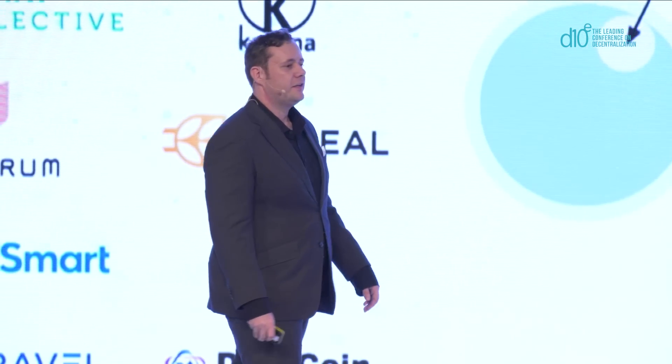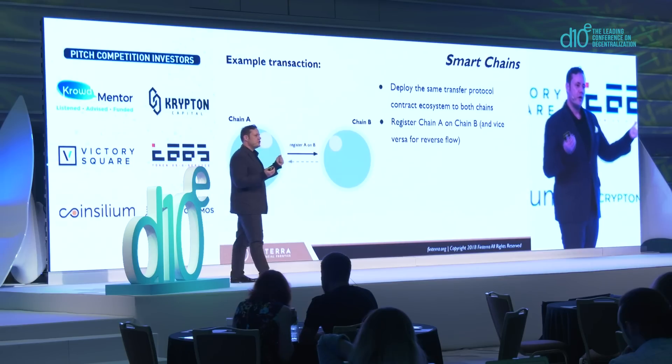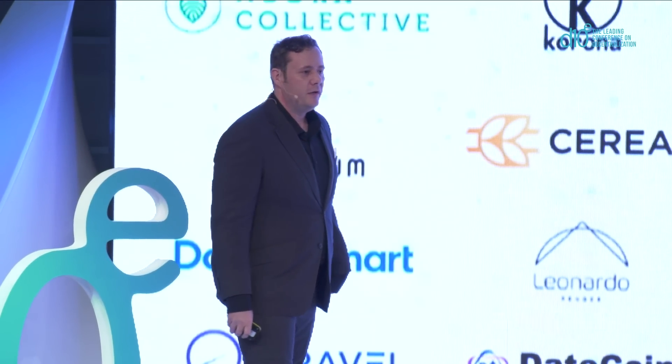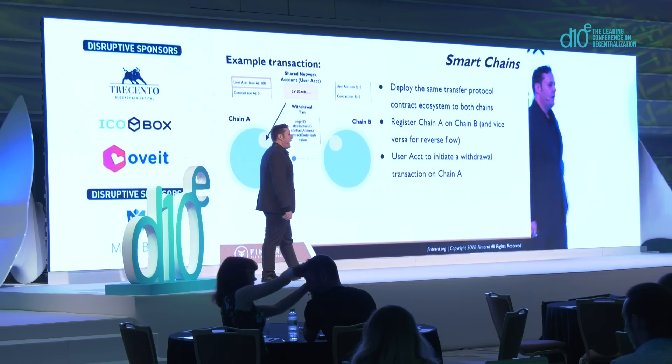I'm going to give an example of how this is accomplished — a transfer of value, transferring tokens from one chain to another. Before we do this, we need to deploy the same ecosystem of contracts on two different chains. After that, we need to register these chains with each other. Registration is done via a transaction in a normal manner — it allows the origin chain and destination chain to know that the other chain is in the ecosystem and safe to communicate with. Then we introduce a shared user account, and the user initiates a withdrawal transaction on the origin chain, chain A. It includes a bunch of parameters that are integral for cryptographically validating all of the information being passed.